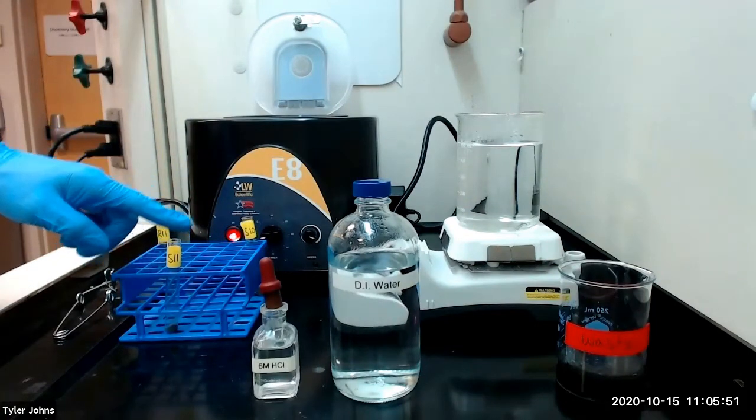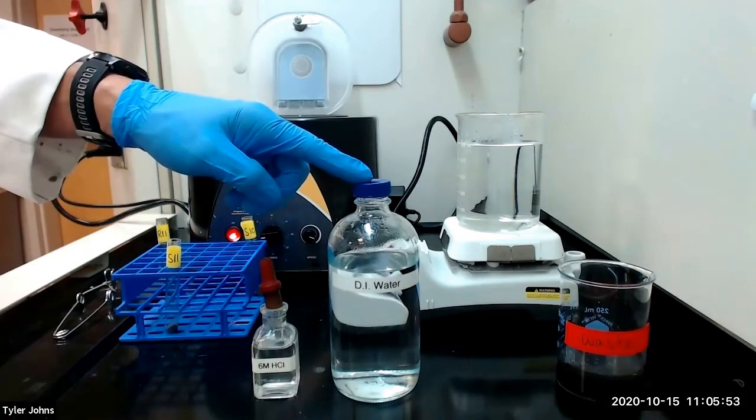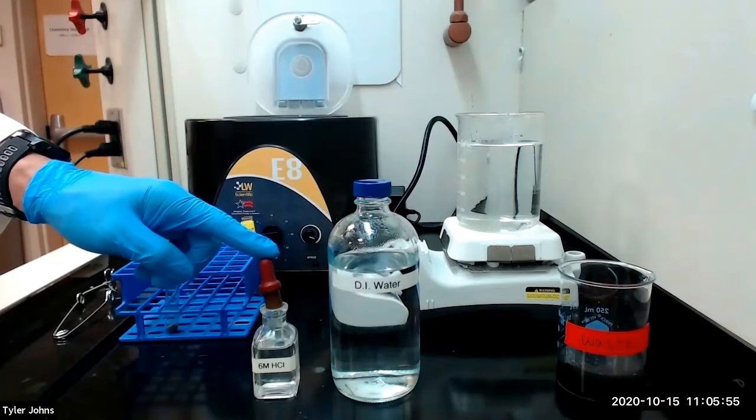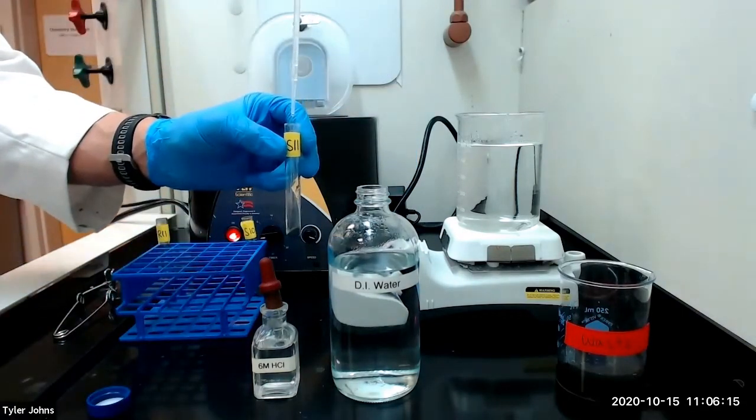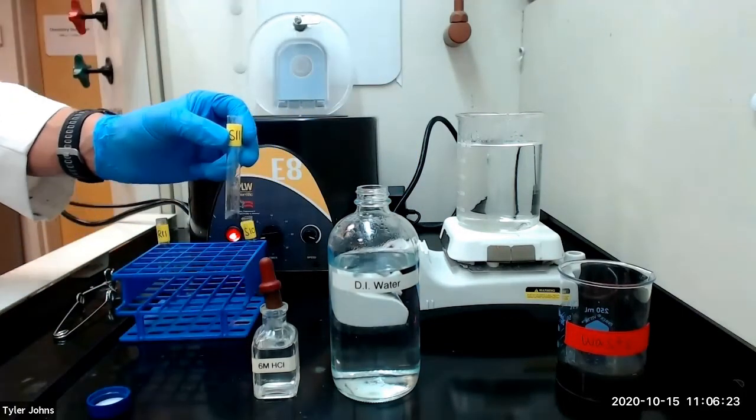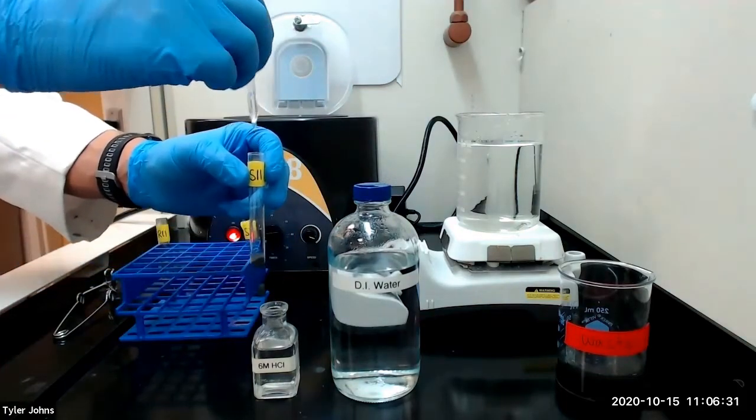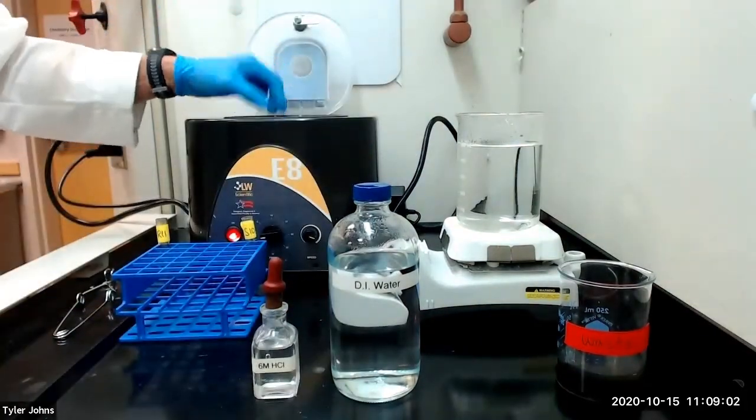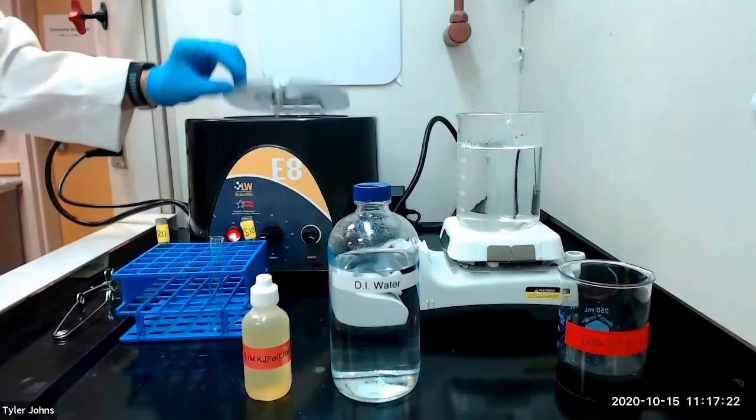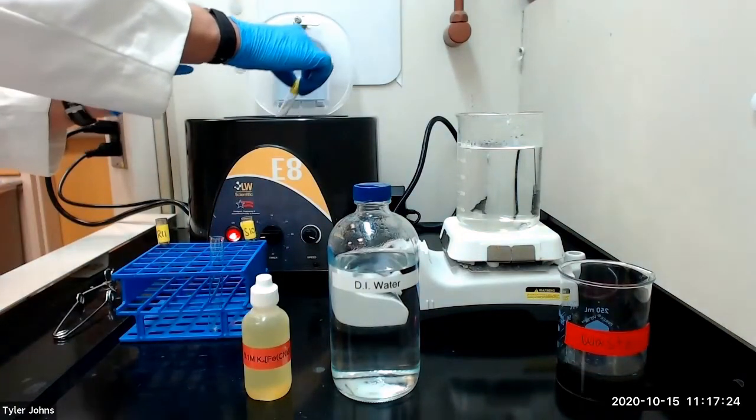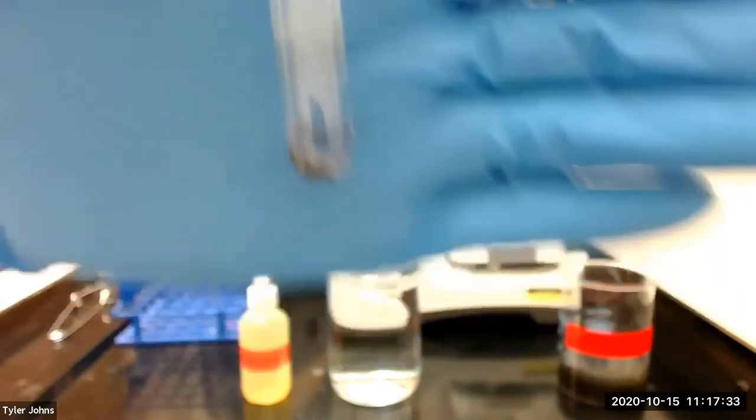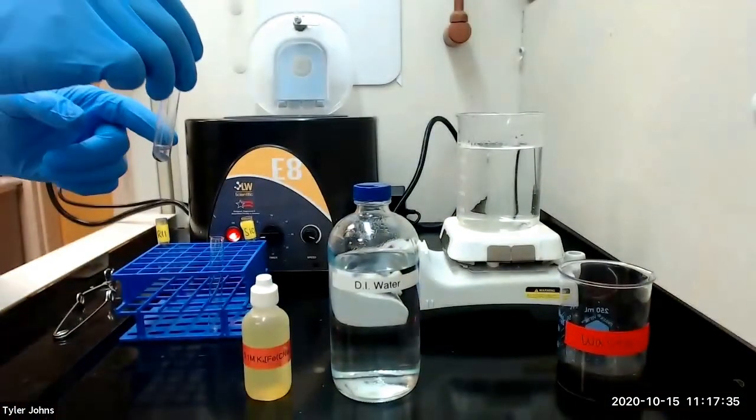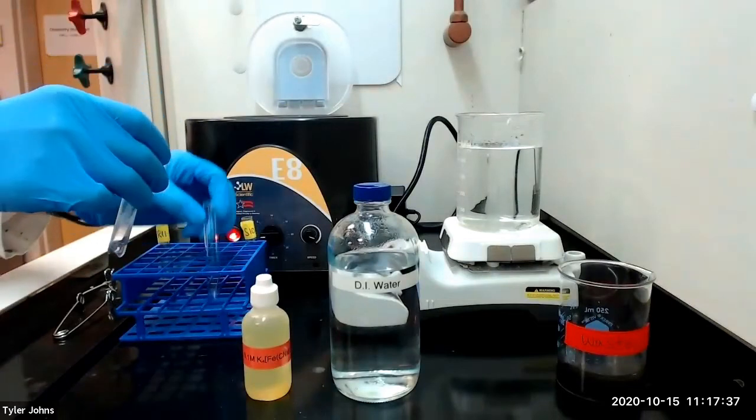To our light gray precipitate, we will add 10 drops of deionized water, and then add 6 molar hydrochloric acid dropwise with stirring until the mixture is just acidic. This is what our mixture looks like after centrifugation. We will then decant the clear solution into a new test tube.